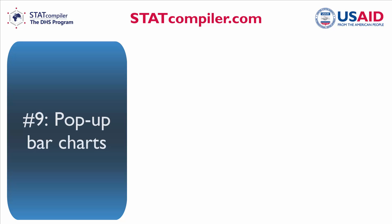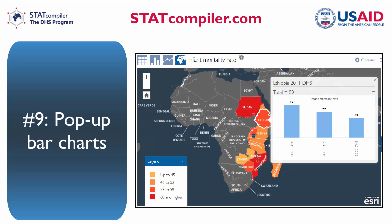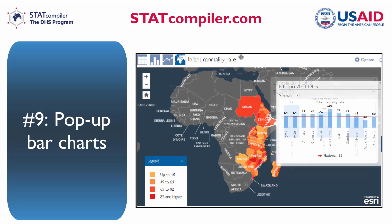Number 9. STATcompiler maps now include pop-up bar charts to illustrate trends and subnational comparisons.